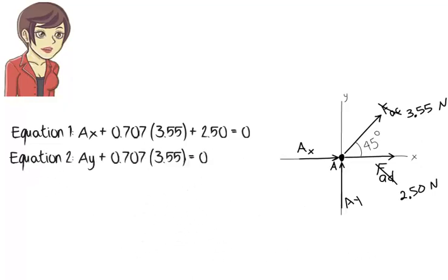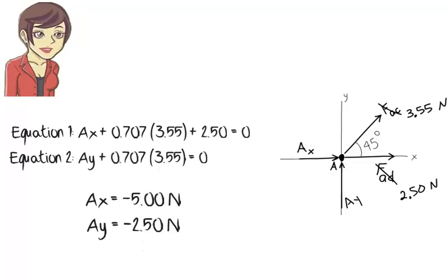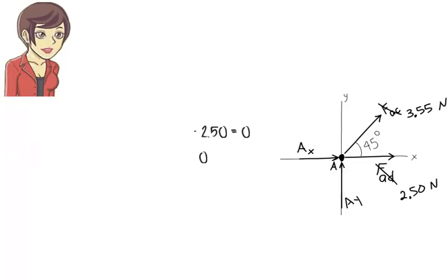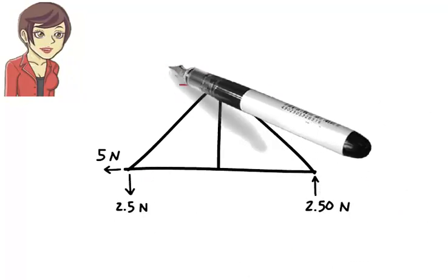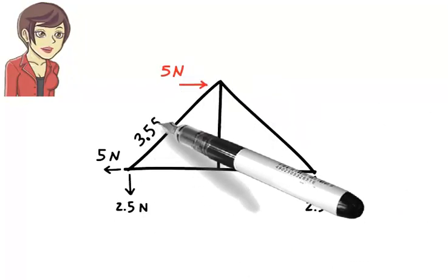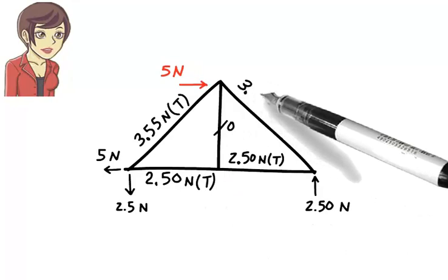The remaining joint, joint A, now has only two unknown forces: AX and AY. Using equations 1 and 2, AX equals negative 5 Newtons and AY equals negative 2.5 Newtons. The negative sign means the assumed direction for the force is incorrect — we assumed AY to be upward, but in reality it is a downward force. We generally present the results of truss analysis by writing the force magnitudes on the members and marking compression members with a capital C and tension members with a capital T.